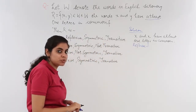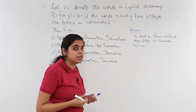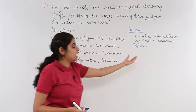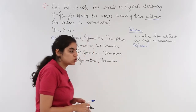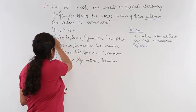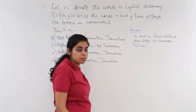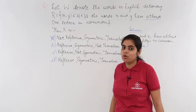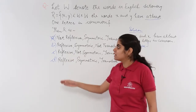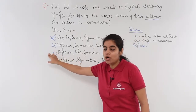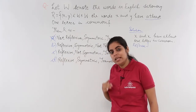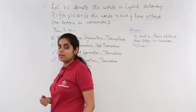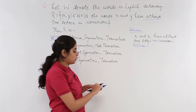Now let's look at the options and strike off what we can. Option A says 'not reflexive,' but we found it is reflexive, so I can directly strike off option A. The remaining three options all include reflexive, so my answer would be either option B, C, or D. The next step is to check whether it is symmetric, and then whether it is transitive.